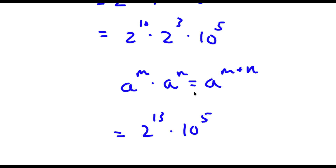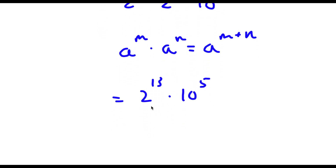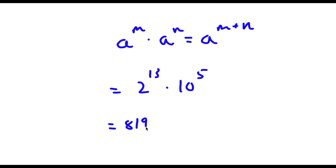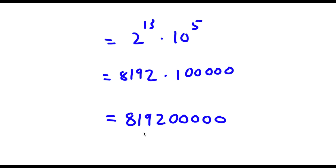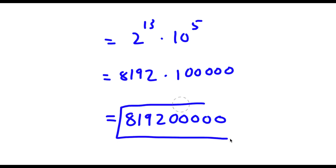So now I have 2 to the power of 13 times 10 to the power of 5. Now 2^13 is equal to 8192, and 10^5 is 100000. Multiplying these gives 819,200,000, so this is my answer. Thank you.